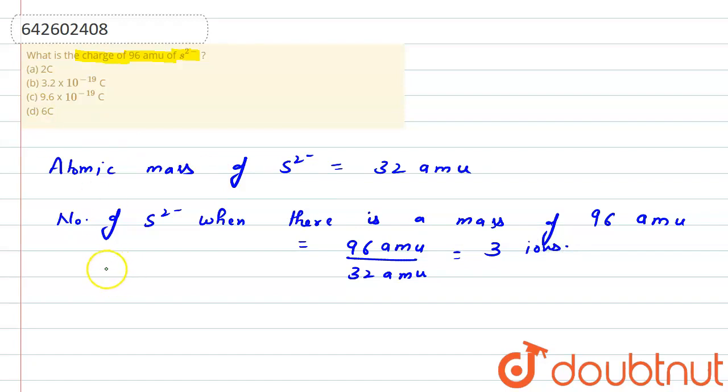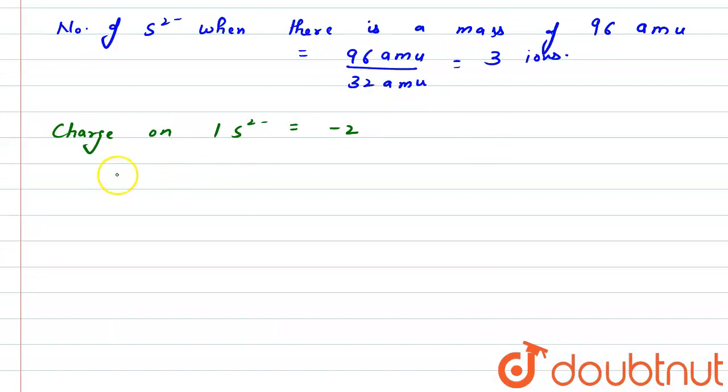Right, now charge on 1 sulfide ion is minus 2. So charge on 3 sulfide ions will be minus 2 multiplied by 3, equals to minus 6.